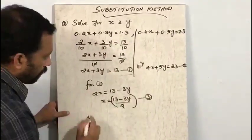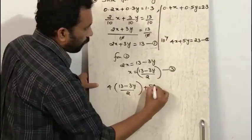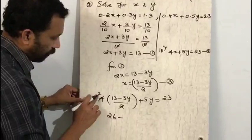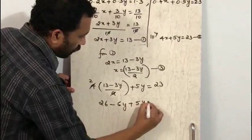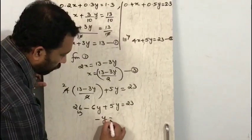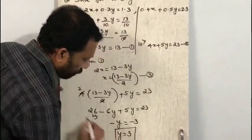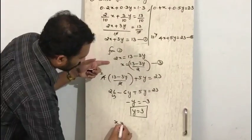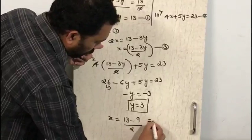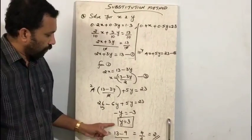Substituting equation 3 into equation 2: 4 times (13 minus 3y upon 2) plus 5y equals 23. Here 4 and 2 simplify to 2, so we get 2 times 13 minus 2 times 3y plus 5y equals 23, that is 26 minus 6y plus 5y equals 23. Transposing: minus y equals 23 minus 26, so minus y equals minus 3, giving y equals 3. Substituting into equation 3: x equals 13 minus 9 upon 2, that is 4 upon 2, so x equals 2. Therefore x equals 2 and y equals 3 is the solution.